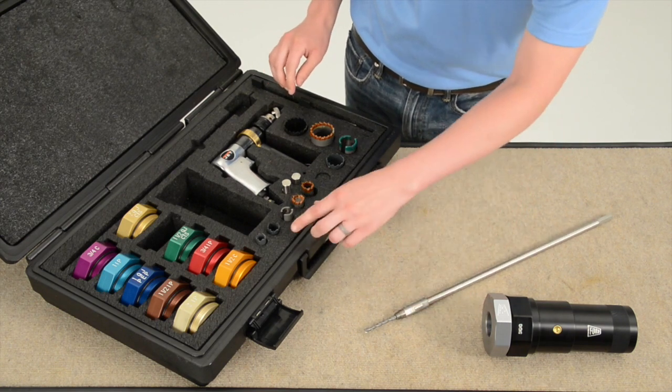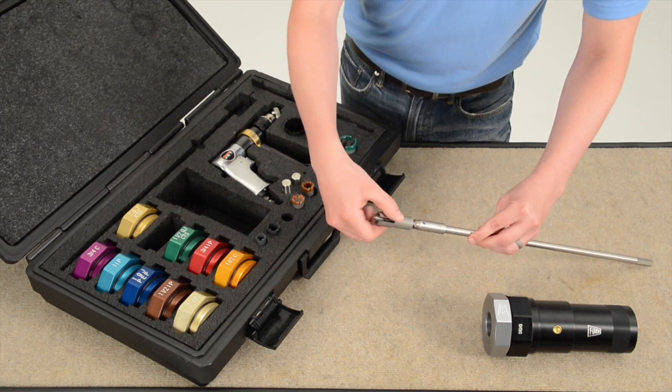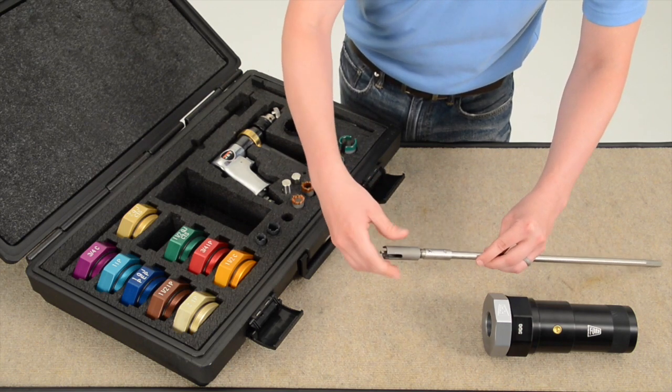Choose the correct carbide tipped shell cutter for the size and pipe material you are drilling. Place the cutter over the pilot bit and screw onto the shaft.